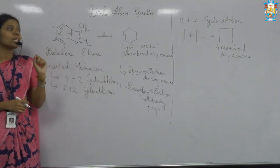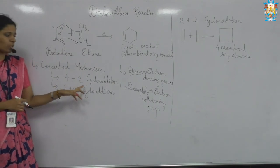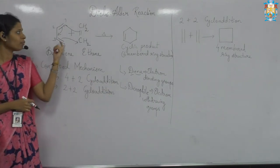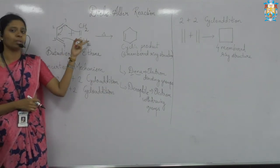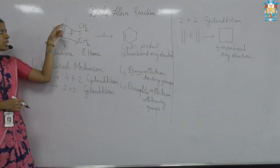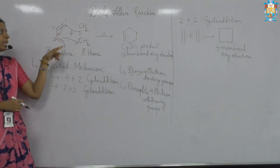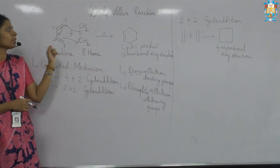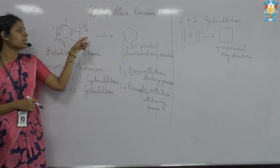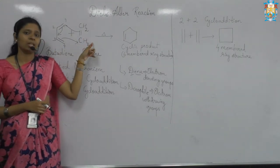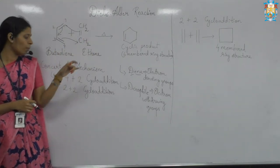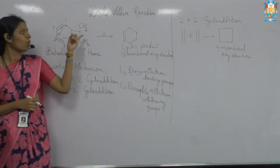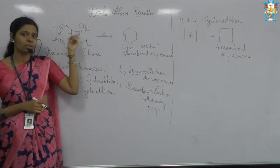It is always a four-plus-two cycloaddition wherein you have four and two, that is two pi bonds. You can see it is a four-membered diene and this is an ethene, so it is a four-plus-two cycloaddition with four pi bonds and one pi bond.